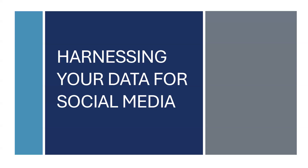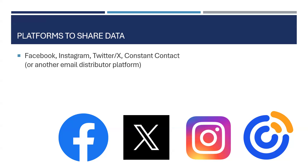Hi everyone, thank you all for being here. We're going to go through several slides about how to harness your data for social media and the various platforms and ways that you can do so. The main platforms like Facebook, Twitter — also now known as X — and Instagram are places where you can share your data. Constant Contact or another email distributor platform is also a really great way to share data, especially if your agency shares monthly newsletters or engages in awareness campaigns.